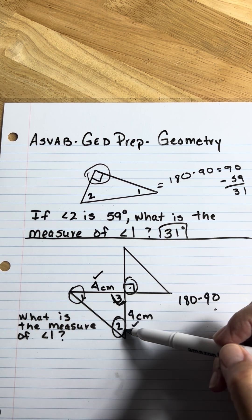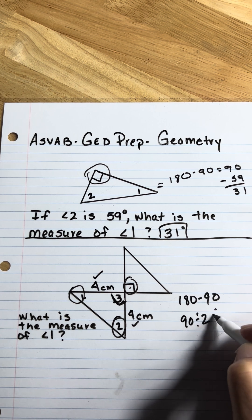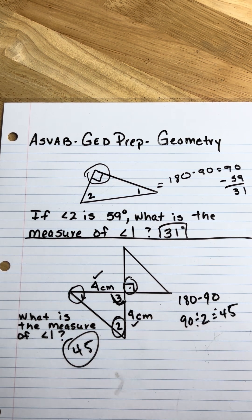So if angle 1 and angle 2 are equal, you can just divide the remaining 90 by 2 and that gives you 45 degrees for angles 1 and 2.